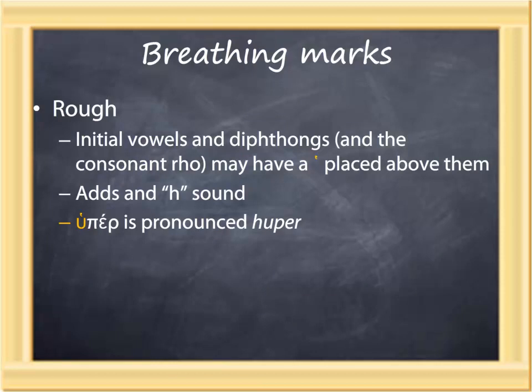We now turn to a number of features in modern printed examples of Koine Greek which were not part of Koine Greek in antiquity. In antiquity, Koine Greek was written all in capital letters with no spaces between the words and no punctuation. When a line came to an end, one continued the word on the next line. The only way one could read Greek in antiquity was to read it out loud. Modern study of Koine Greek has editors which add various markings to the text to help the student read the text out loud and, in some cases, figure out the form of the word.